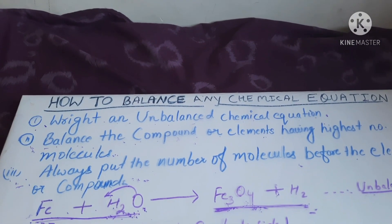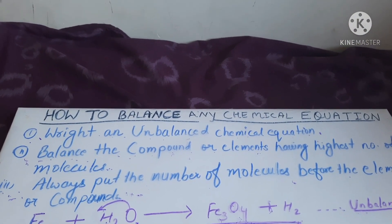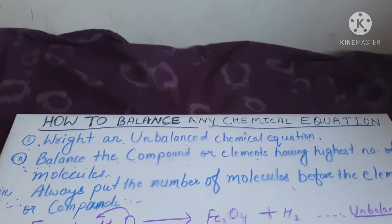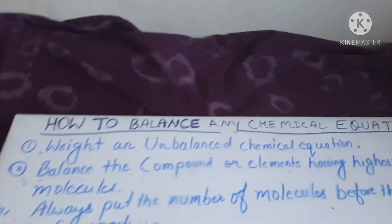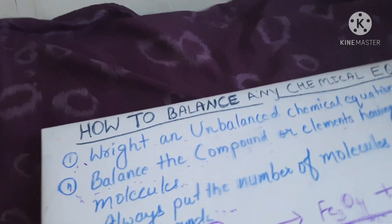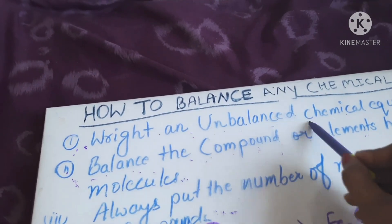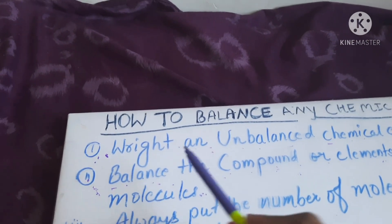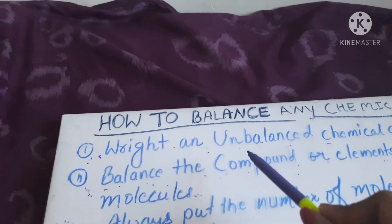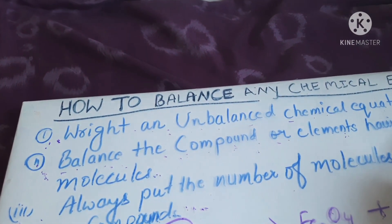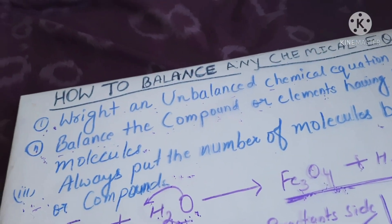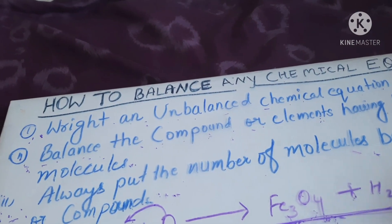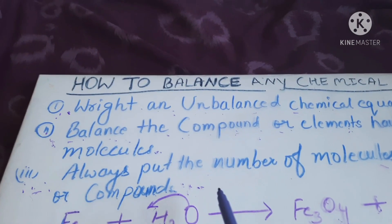Now, the most important topic in this video is how to balance a chemical equation. It is balanced by the hit and trial method. To balance any chemical equation by the hit and trial method, we have to keep in mind three things: first, write an unbalanced chemical equation; second, for convenience, first balance the compound or elements having the highest number of molecules; and third, always put the number of molecules before the element or compound, not after.